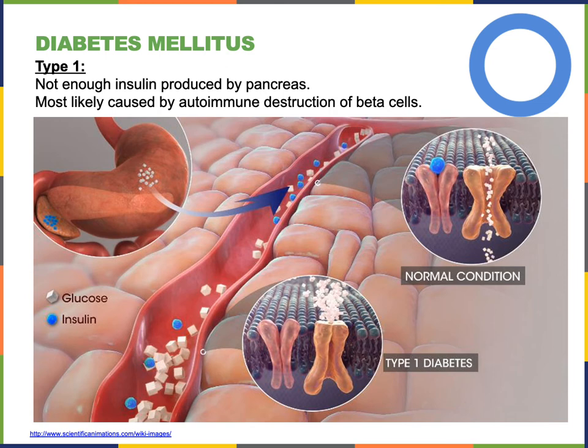Together, all three cardinal signs result from that elevation of blood glucose, and that elevation of blood glucose in type 1 diabetes is because the pancreas cannot produce insulin sufficiently.